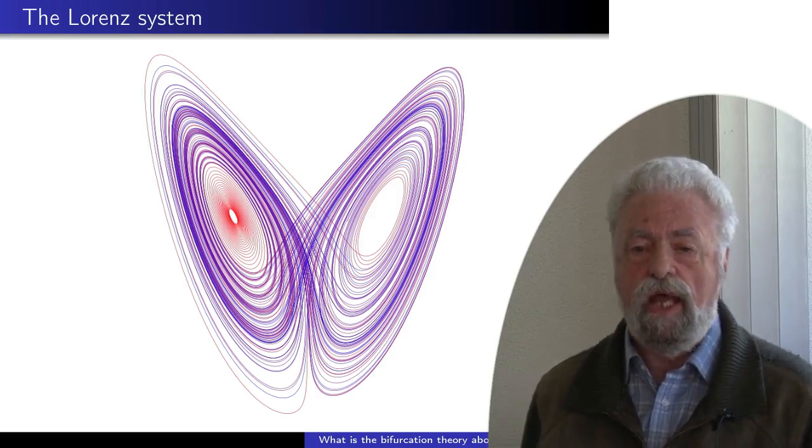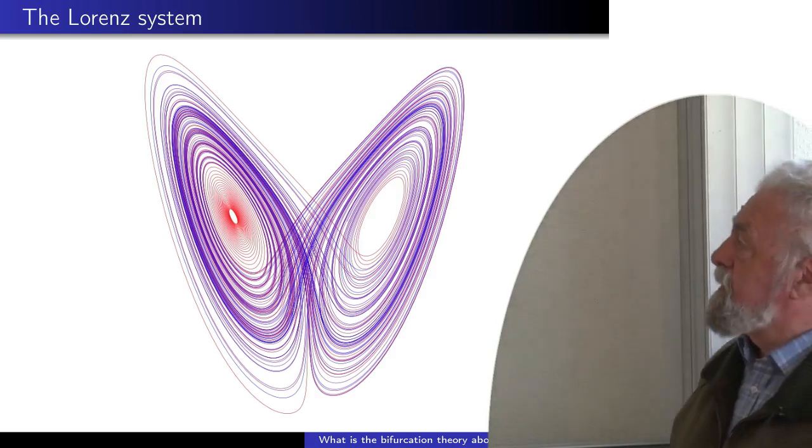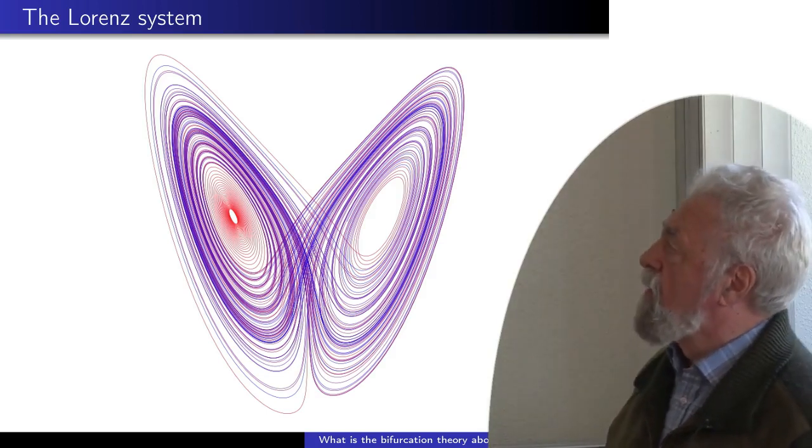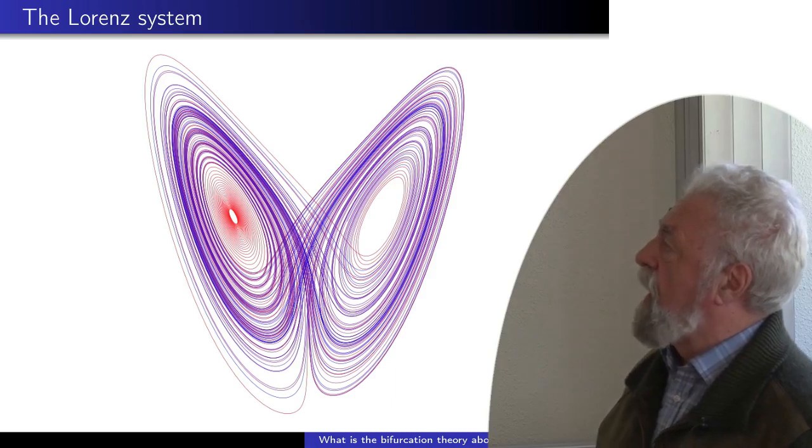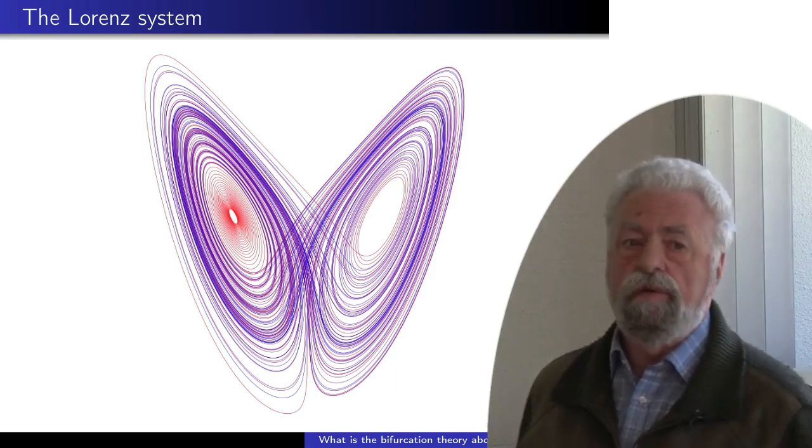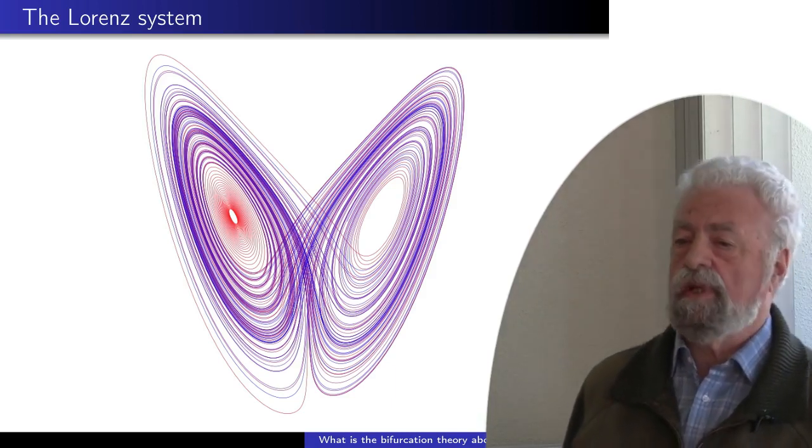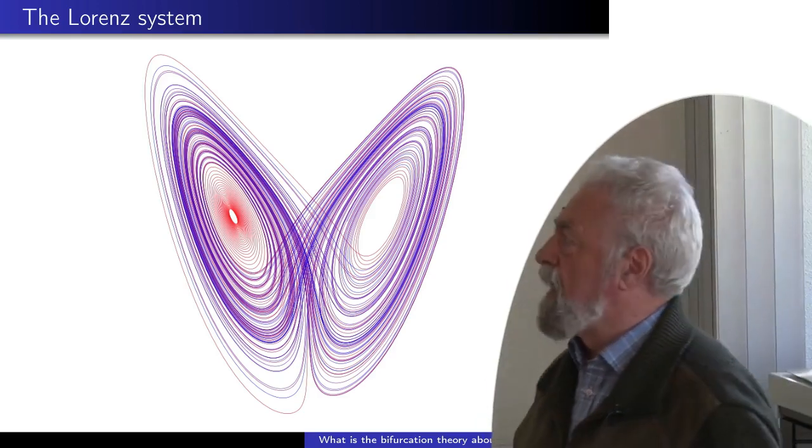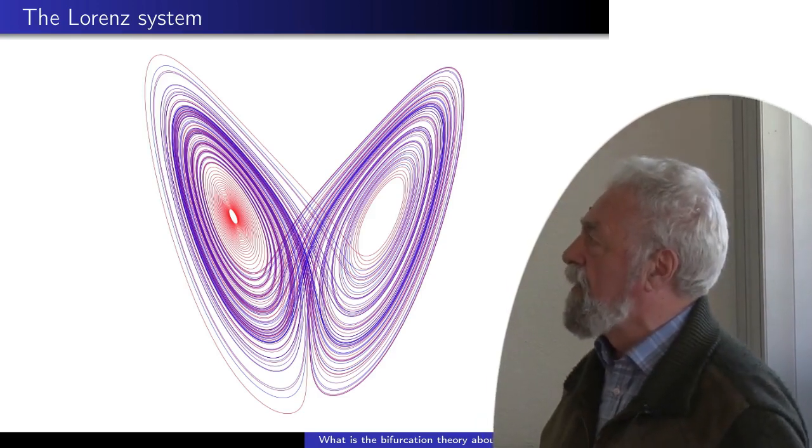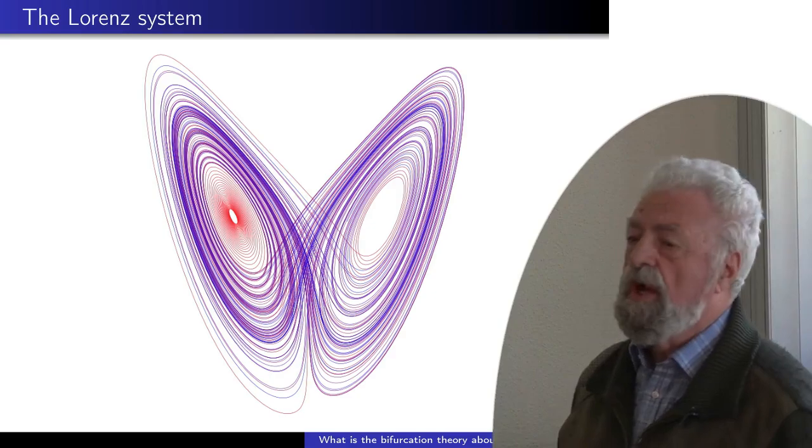And this motion is explained by the chain of bifurcations that I have shown very briefly. This chain of bifurcations was investigated by Guckenheimer and Williams in the West, and by Shilnikov, Bukov, and Afraimovich in the Soviet Union.